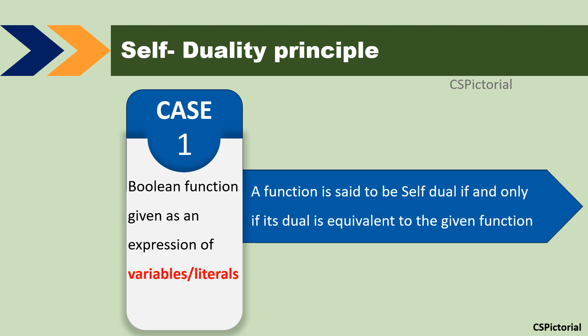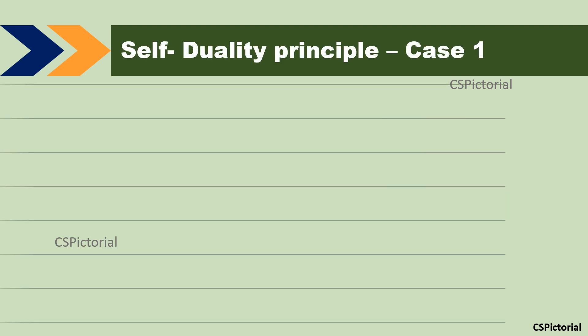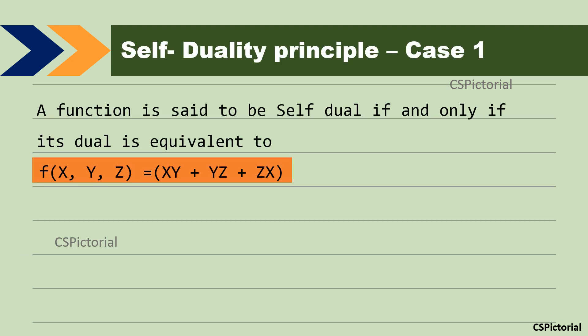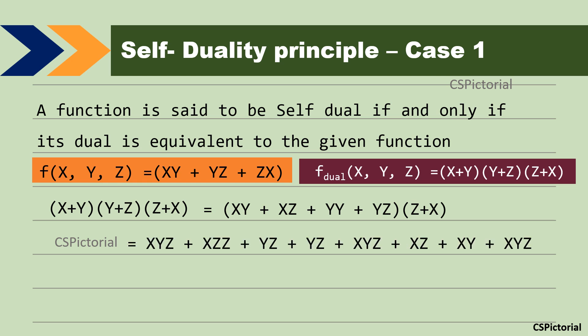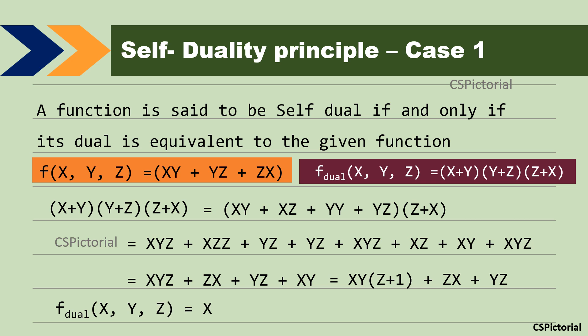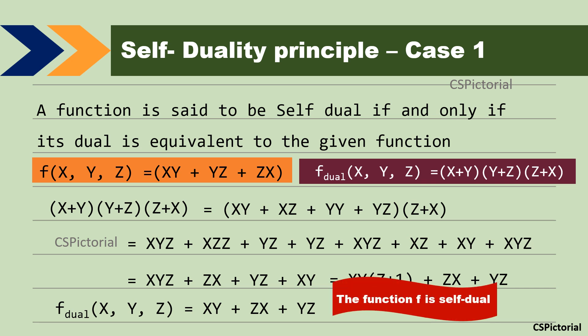We will get it clear with an example. If this Boolean function is given as F of x, y, z equal to xy plus yz plus zx, to determine whether it is self-dual, we first find the dual: F-dual of xyz is written as (x plus y) into (y plus z) into (z plus x). Only replace ANDs with ORs and vice versa; variables remain as such. After simplification, F-dual equals xy plus zx plus yz, which is the same as the given expression. Thereby, the given Boolean function F of xyz is a self-dual function.